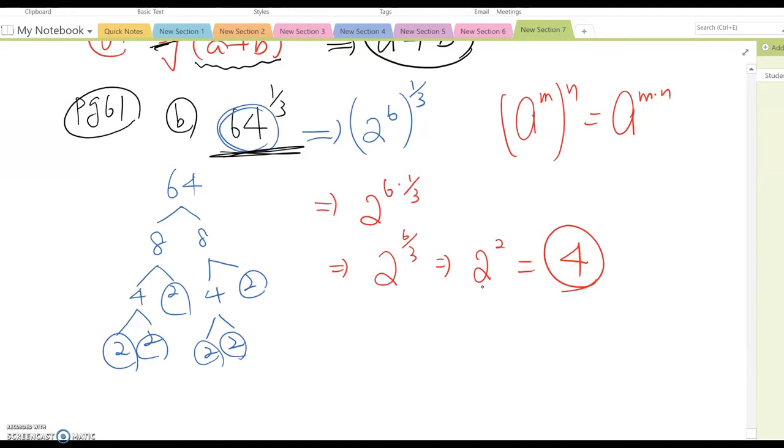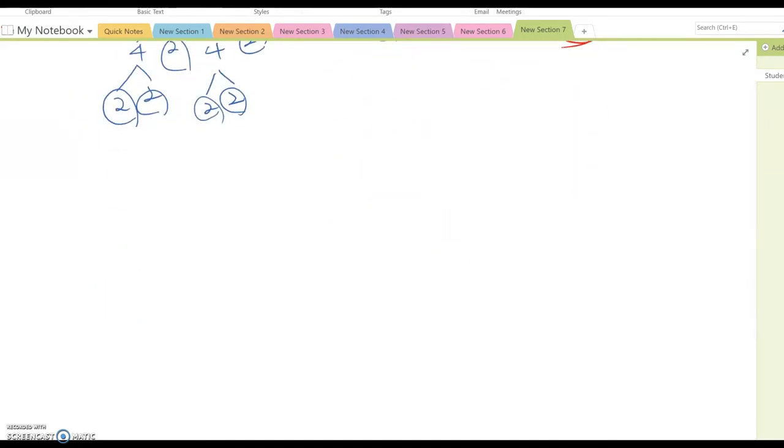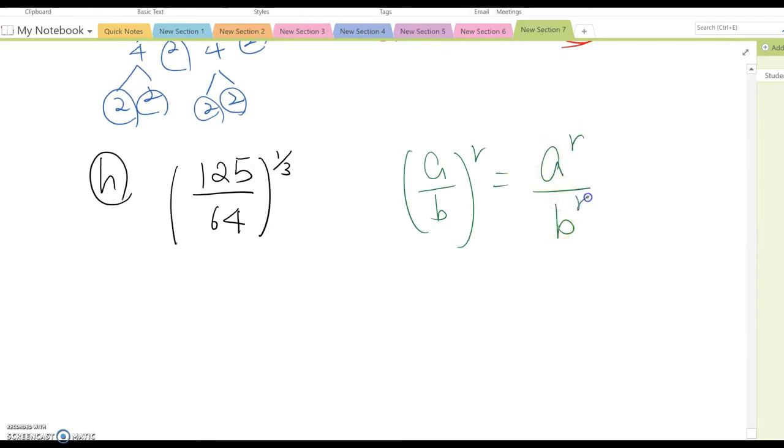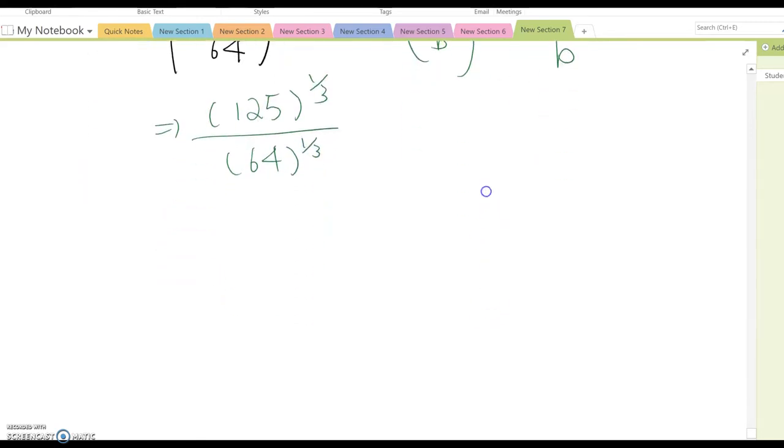Another example, maybe H. H is 125 over 64 to the 1/3 power. Even though this is a fraction form, we do exactly the same thing. We also want to apply the property (a/b) to the r equals a to the r over b to the r. So you distribute first and it becomes 125 to the 1/3 power over 64 to the 1/3 power.